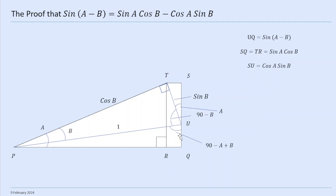SU is this bit here. We know that the hypotenuse of this right-angle triangle is sin(b), and we've got the angle a there, which means SU = cos(a)sin(b). Putting it all together: sin(a-b) = UQ = sin(a)cos(b), which was TR, minus SU, which is cos(a)sin(b). So that tells us that sin(a-b) = sin(a)cos(b) - cos(a)sin(b).